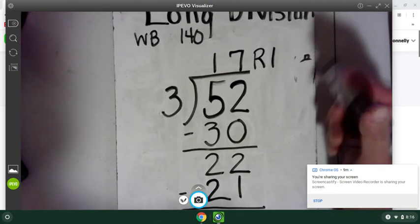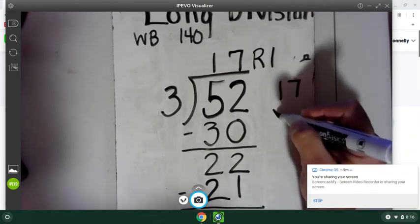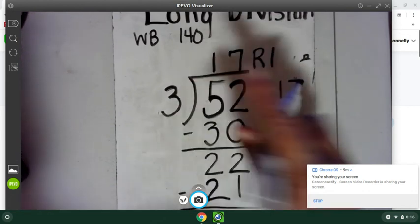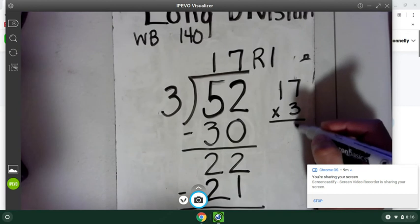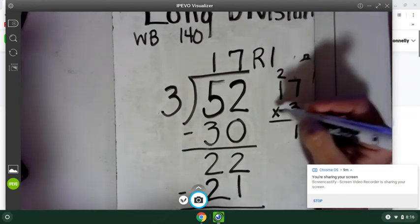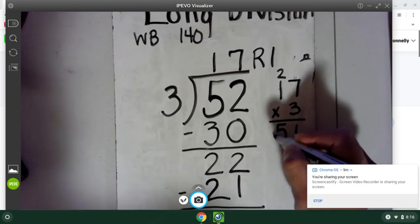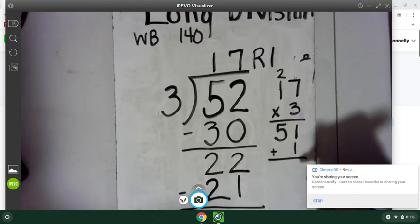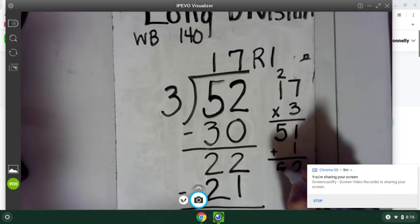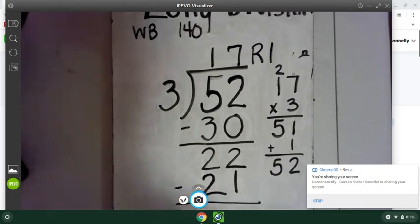So how do I check that? Well, I say 17 times three. So three times seven is 21. Three times one is three, plus two more is five. And then I have the one remaining. So I add that one extra, and I get 52, which is my answer in the box. And so I am correct.